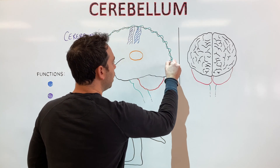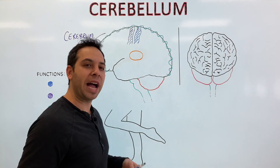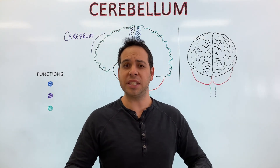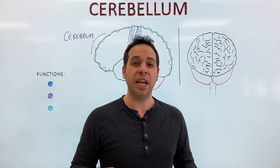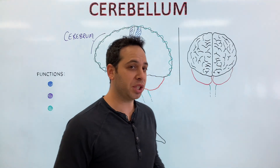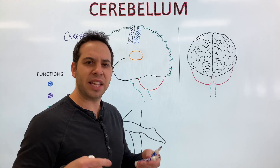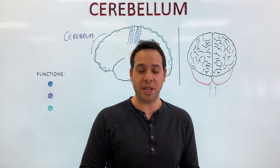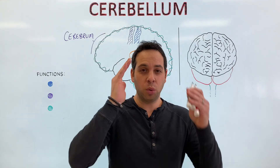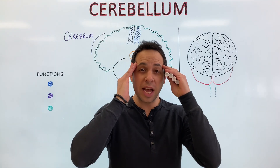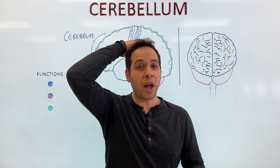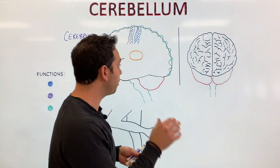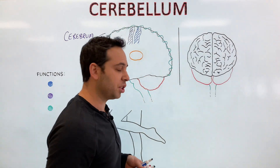What does the cortex do? Well, the cerebral cortex is responsible for higher functions — things like learning, organizing, decision making, problem solving, speech, and processing vision. You can also think of the cortex as divided into four lobes. We have our frontal lobe, our temporal lobes, our parietal lobes, and our occipital lobe, which sits in the back of the head. So there's our cerebrum, that's our largest structure.